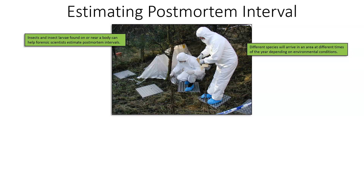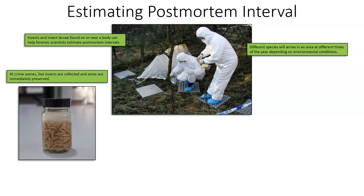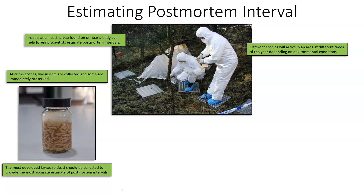There are a lot of different variables and descriptors that have to be met in insect development in order for them to successfully colonize a body or an area. At crime scenes, live insects that are colonizing the body are collected. Some are immediately preserved in jars like this. Some of them will be kept alive, and those that are most abundant or the oldest are selected.